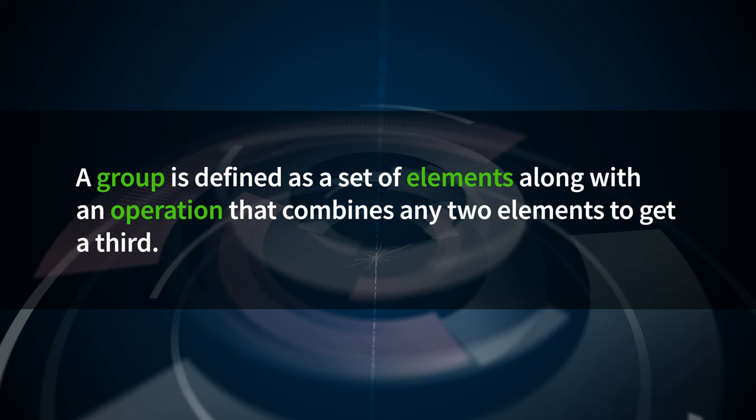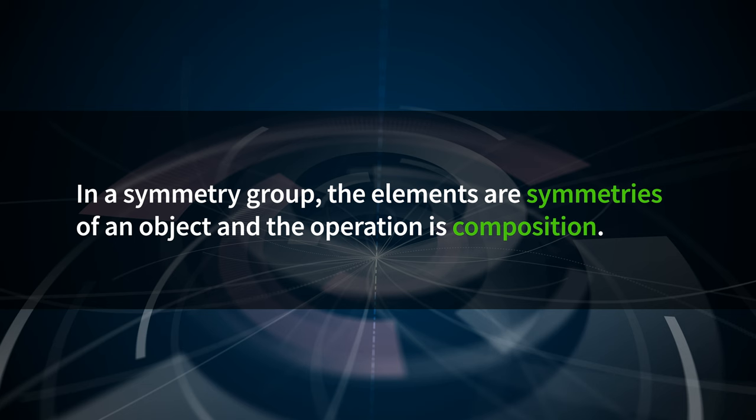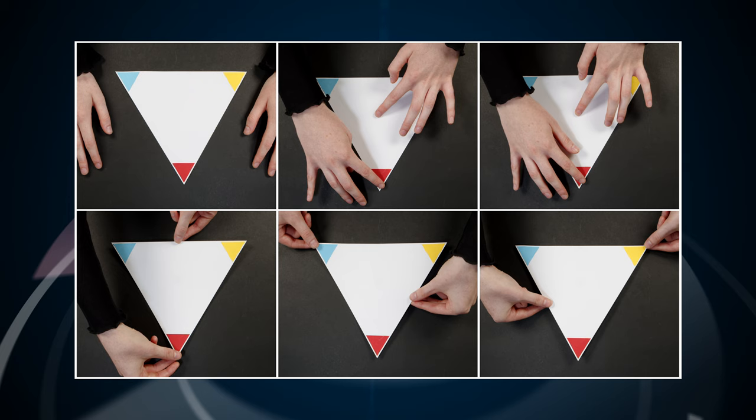A group is defined as a set of elements, along with an operation that combines any two elements to get a third. To be a group, the elements of the set also have to relate to each other in a very specific way. The group must follow certain rules, called closure and associativity, and contain special elements, called an identity and an inverse. The specific type of groups we are interested in are called symmetry groups. In a symmetry group, the elements are symmetries of an object, and the operation is composition — applying one symmetry action and then another. Let's go back to our trusty equilateral triangle. We know from earlier that there are six distinct symmetry actions for this shape: three reflections and three rotations.